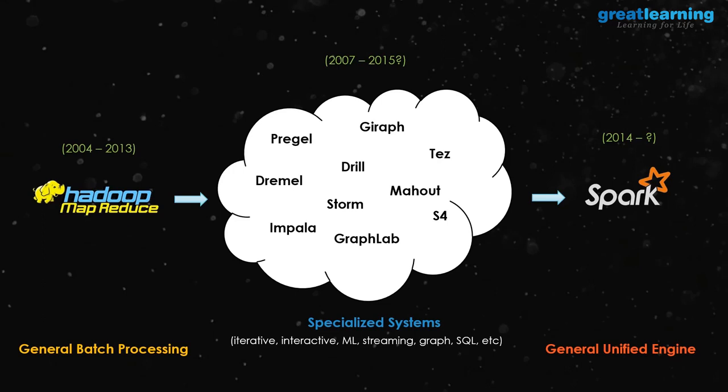In 2014 when Spark came, the biggest USP of Spark is that it is a unified processing engine. What these 50-plus tools on Hadoop are doing, Spark alone can do — that is the real advantage of Spark. Many people think it's just about speed, but speed is a byproduct. The real reason people are migrating to Spark is that all these tools combined, Spark alone can replace.